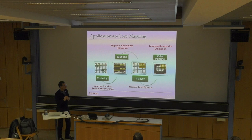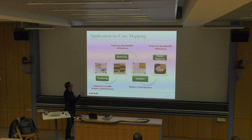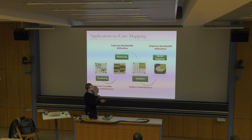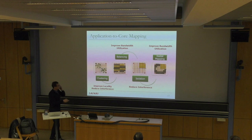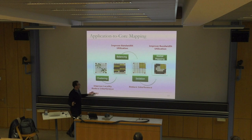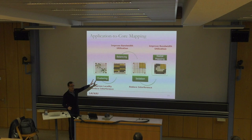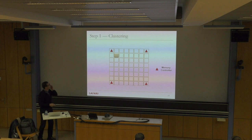Basically, the mechanism partitions the network between applications to reduce latency and interference, tries to provide load balance, provides isolation to minimize interference and maximize throughput, and determines where applications should be mapped within a cluster with respect to proximity to memory controllers. The paper also proposed changes to the OS page replacement algorithm to reduce page faults in the system.